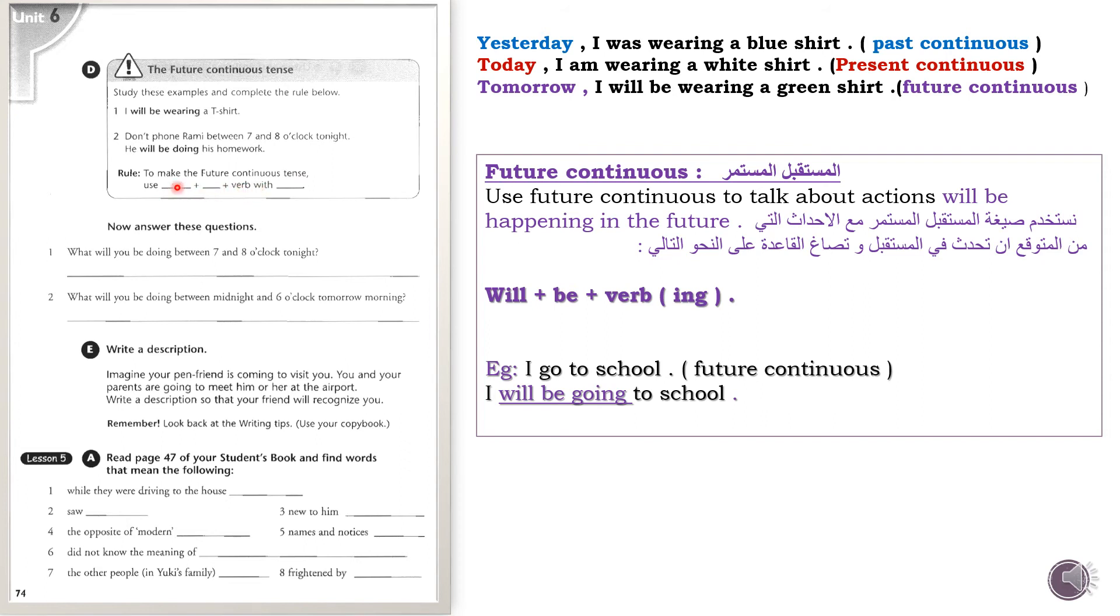Rule: To make the future continuous tense, write the rule here yourself. You will use 'will' plus 'be' plus a verb with '-ing'. Write this rule in your notebook. Now answer this question from yourself: What will you be doing between seven and eight o'clock tonight? You will write 'I will be...' For example, 'I will be sleeping tonight.' What will you be doing between midnight and six o'clock tomorrow morning? Tomorrow, what will you be doing? I expect you to answer these sentences.